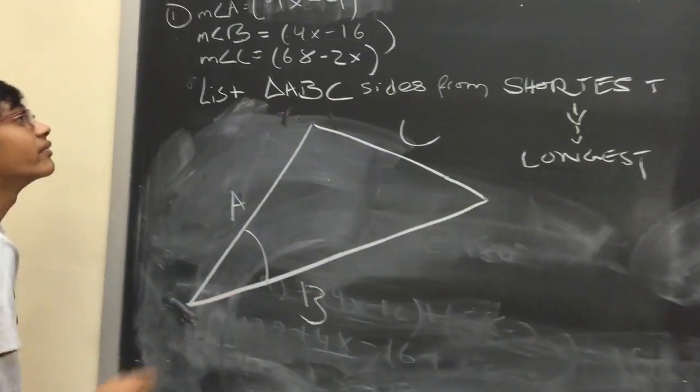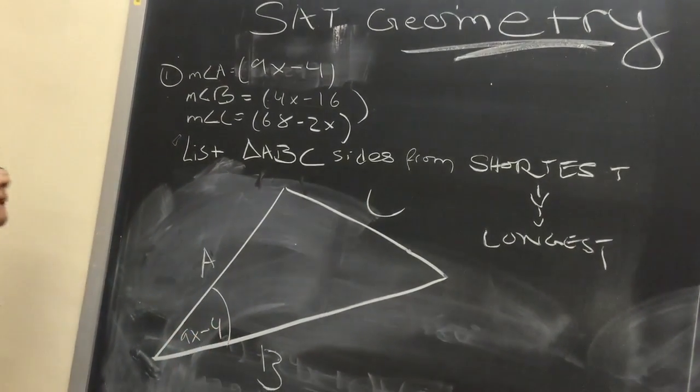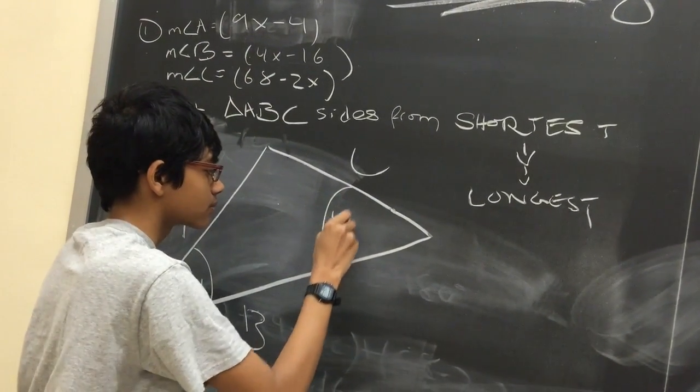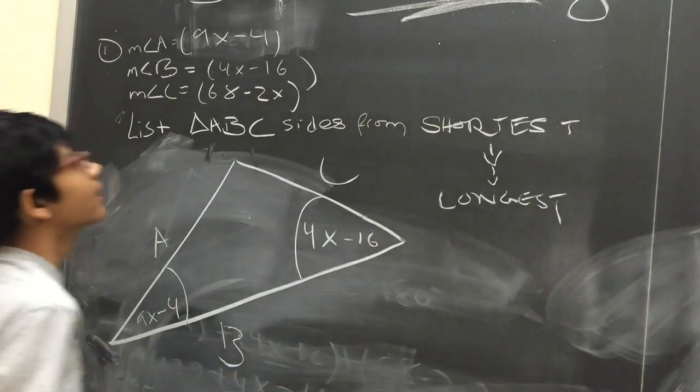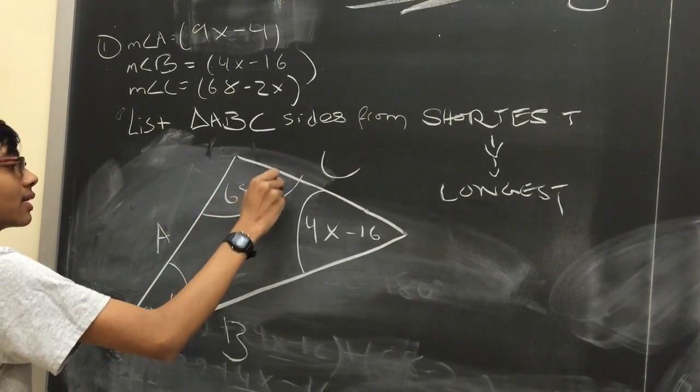Angle A is given to be a measure of 9x minus 4. Angle B is given to be a measure of 4x minus 16. And angle C is given to be a measure of 68 minus 2x.